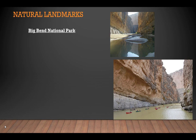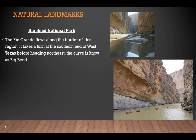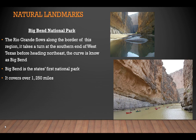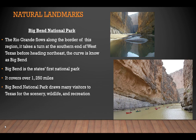Also in this region is Big Bend National Park. The Rio Grande flows along the border here, taking a turn at the southern end of West Texas before heading northeast — that curve is known as Big Bend. Big Bend was Texas's first national park. It covers over 1,250 miles and draws many visitors to Texas, mainly for the scenery, the diverse wildlife within the park, and, of course, recreation.